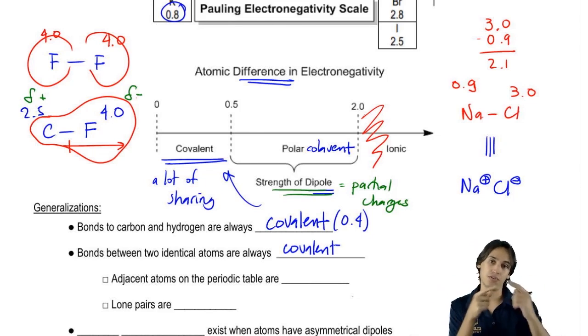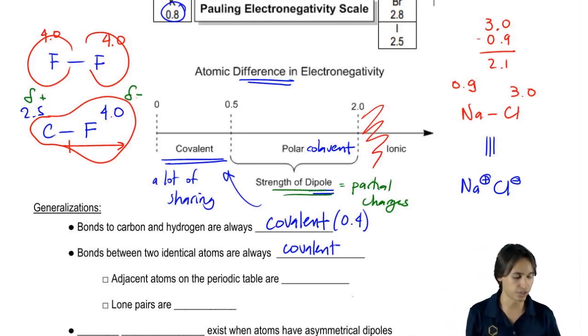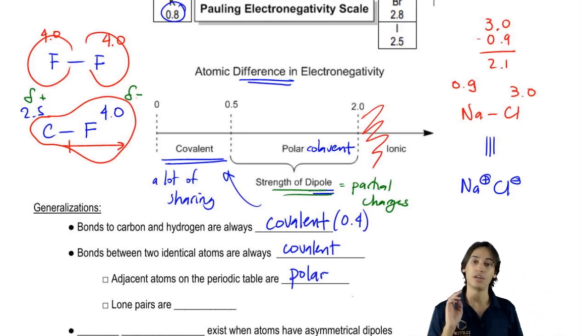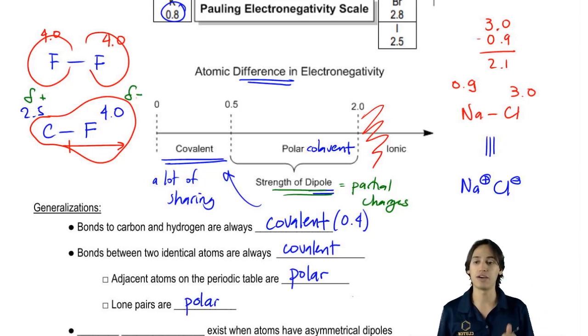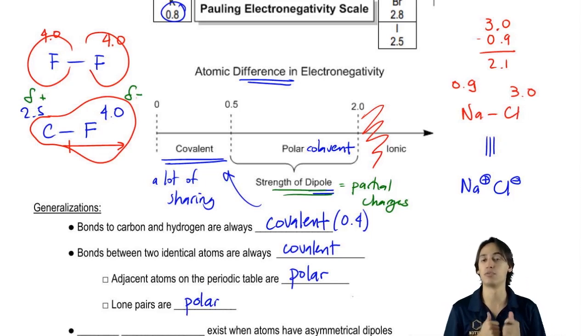Adjacent atoms on the periodic table, if they're bonded, are going to be polar. That's an example where let's say I give you nitrogen and oxygen or nitrogen and carbon. There's going to be a dipole in that direction towards the more polar one. And then finally, lone pairs are also polar. Lone pairs are going to have their own dipole moment that pulls in the direction of wherever the lone pair is facing.